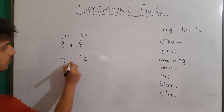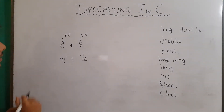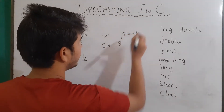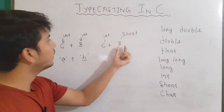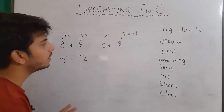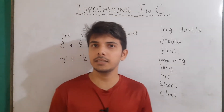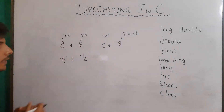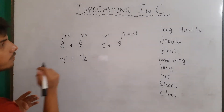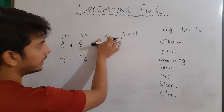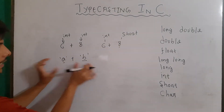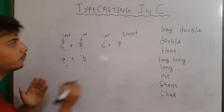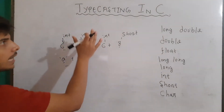Typecasting occurs when we try to perform some operation between different data types. For example, if 6 is of type integer and 8 is of type short, both operands are of different data types — in that case, typecasting will occur. Typecasting is basically the promotion of the data type done to make both operands of the same data type. Type conversion is the process of converting one data type into another so that both operands are of the same data type.